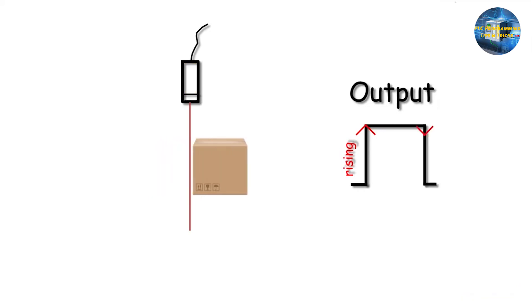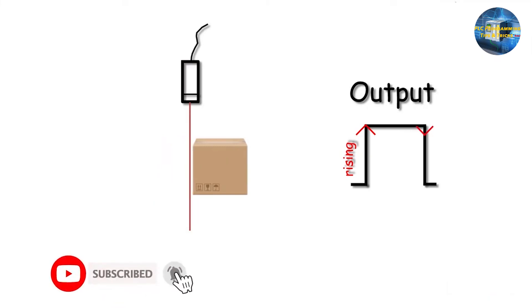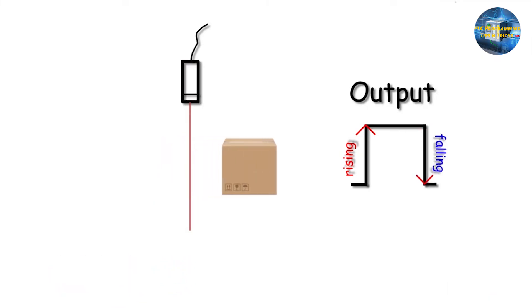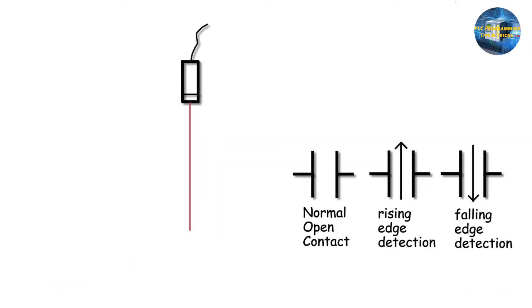As long as the box stays in front of the sensor, the output signal stays on. The moment the box leaves the sensor's sensing range, the output signal turns off and the output pulse signal drops — this is called the falling edge of the output signal. Now let's see how rising and falling edges can be used in PLC programming.